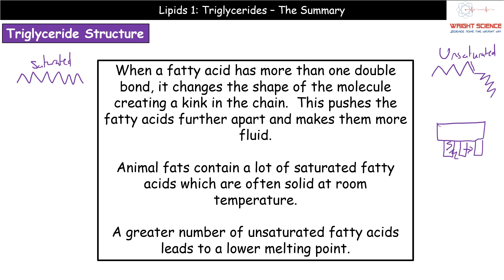This confers certain properties onto the different types of lipids we encounter. Animal fats contain quite a large number of saturated fatty acids - they're all straight chains so they sit quite closely together, meaning we're going to have a solid at room temperature. If however we've got a larger number of unsaturated fatty acids, as found in many plants, the kinks push them further away from each other, giving a lower melting point - so these tend to be liquid at room temperature, like vegetable oils in your cupboard.